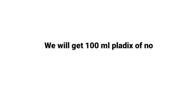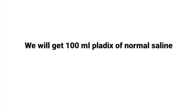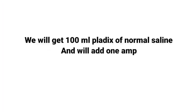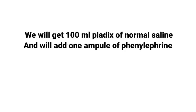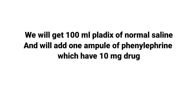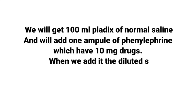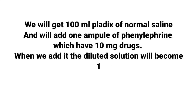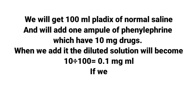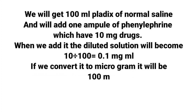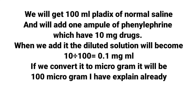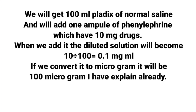The second dilution method: take a 100 ml bag of normal saline and add 1 ampoule of Phenylephrine containing 10 mg. The diluted solution becomes 10 mg divided by 100 ml, equal to 0.1 mg per ml. Converting to micrograms, this is also 100 µg per ml.